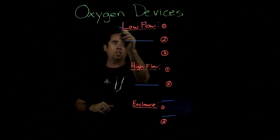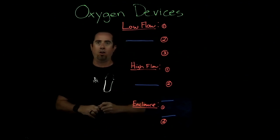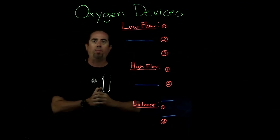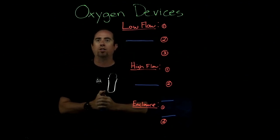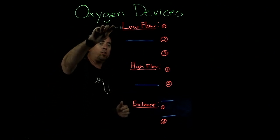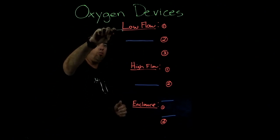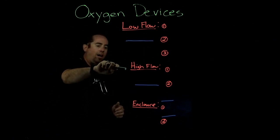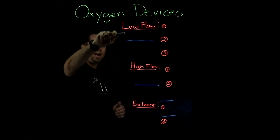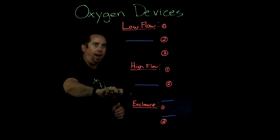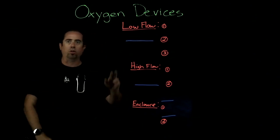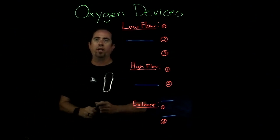Oxygen devices are what we use to help our patients with their oxygen needs. We have three categories: low flow, high flow, and enclosure. The first category we're going to cover is low flow.